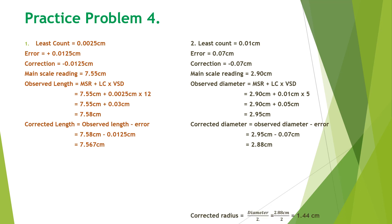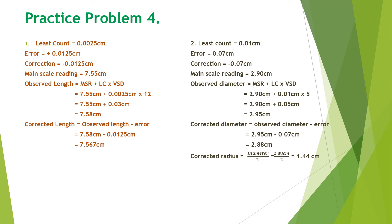As the error is positive, the corrected diameter is observed diameter minus error: 2.95 centimeter minus 0.07 centimeter equals 2.88 centimeter. We need to calculate the radius, which is half the diameter: 2.88 divided by 2 equals 1.44 centimeter. That is all about the numericals based on the Vernier calipers.